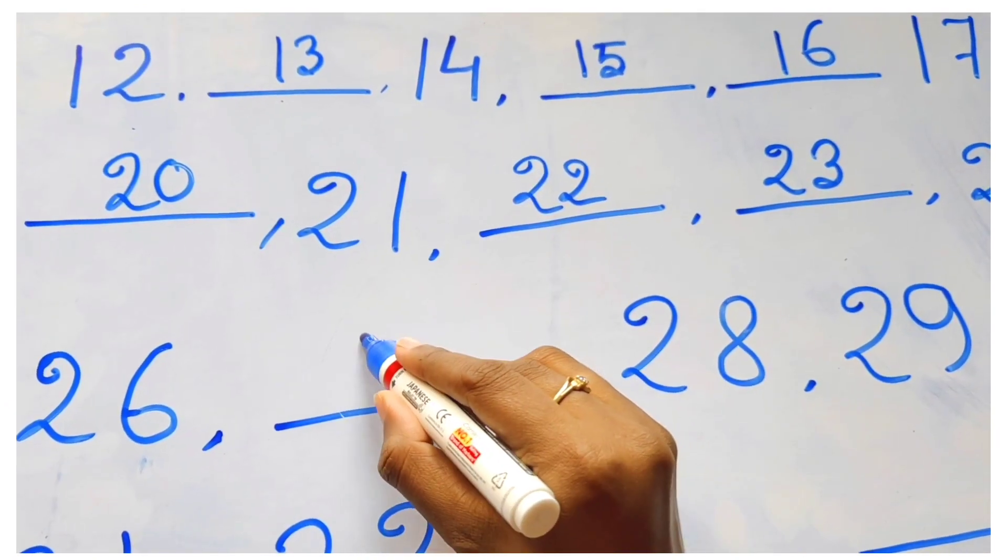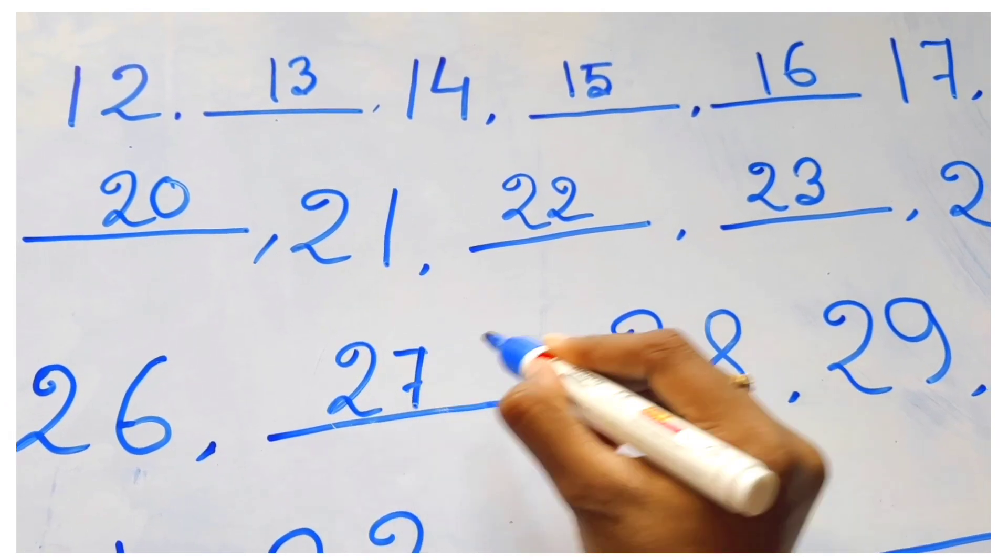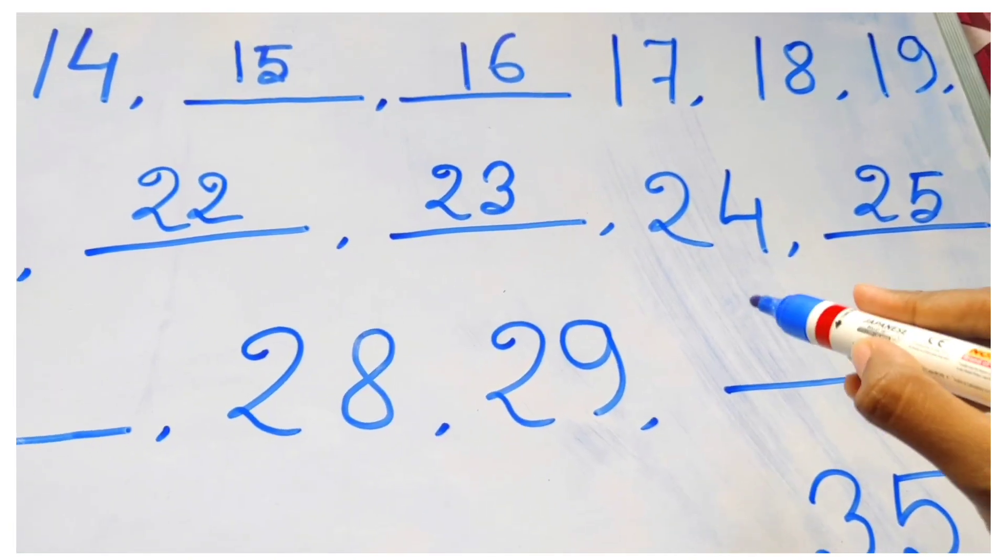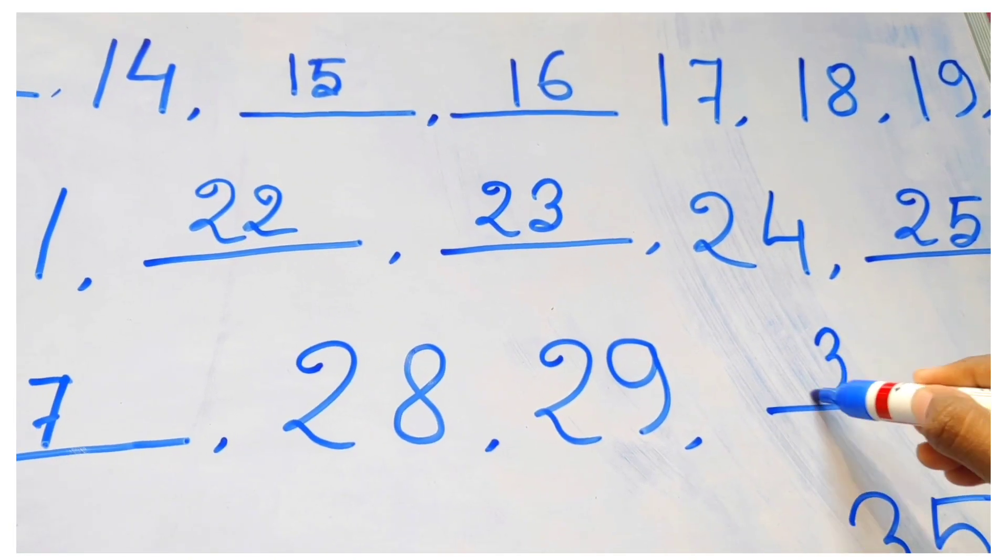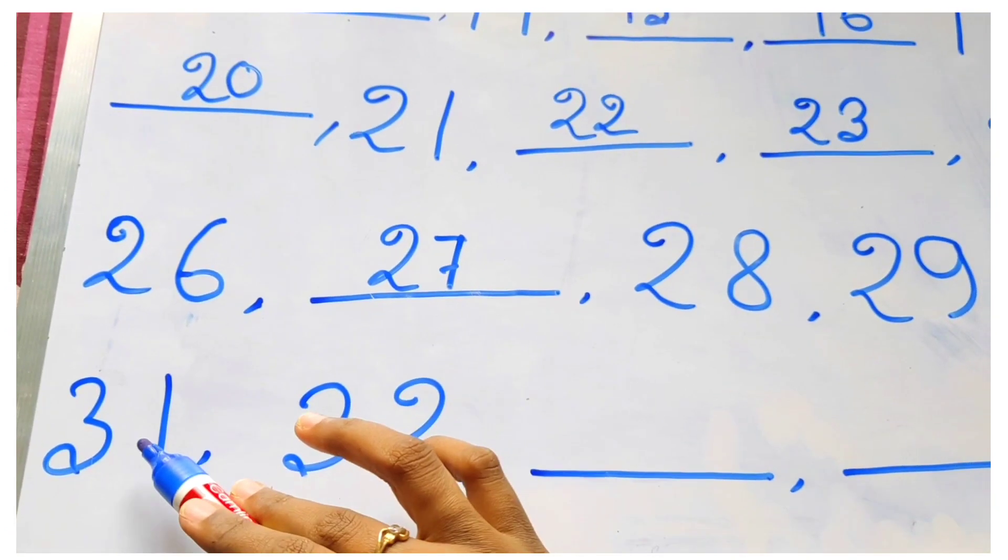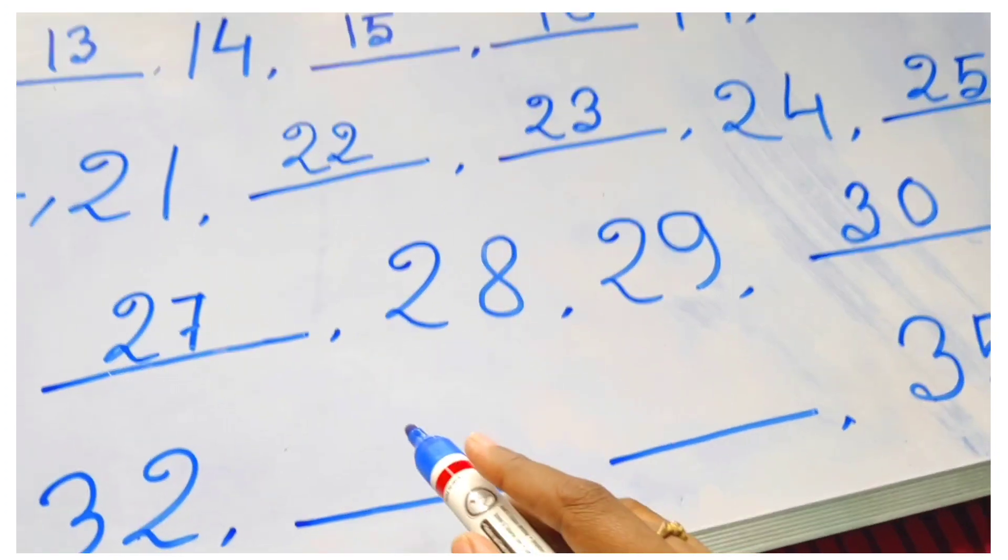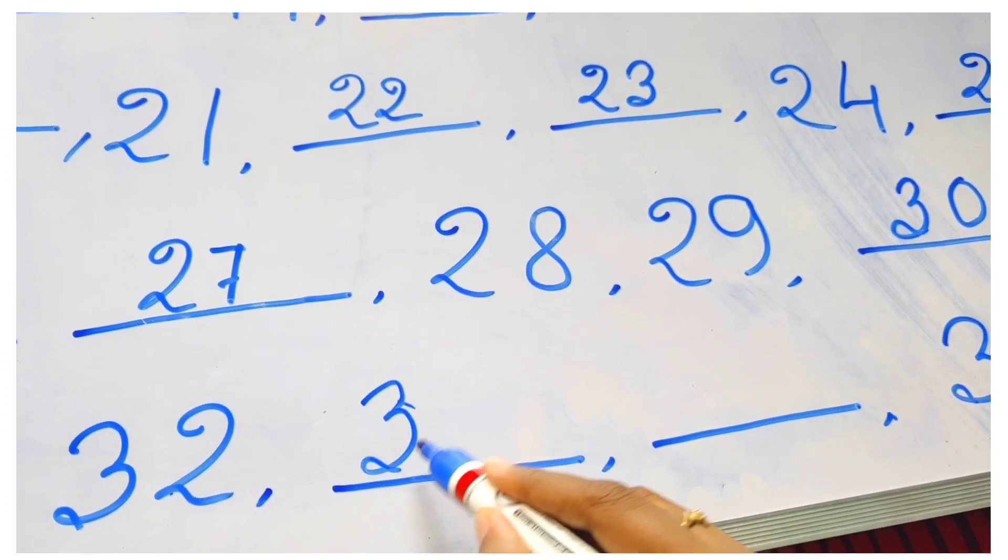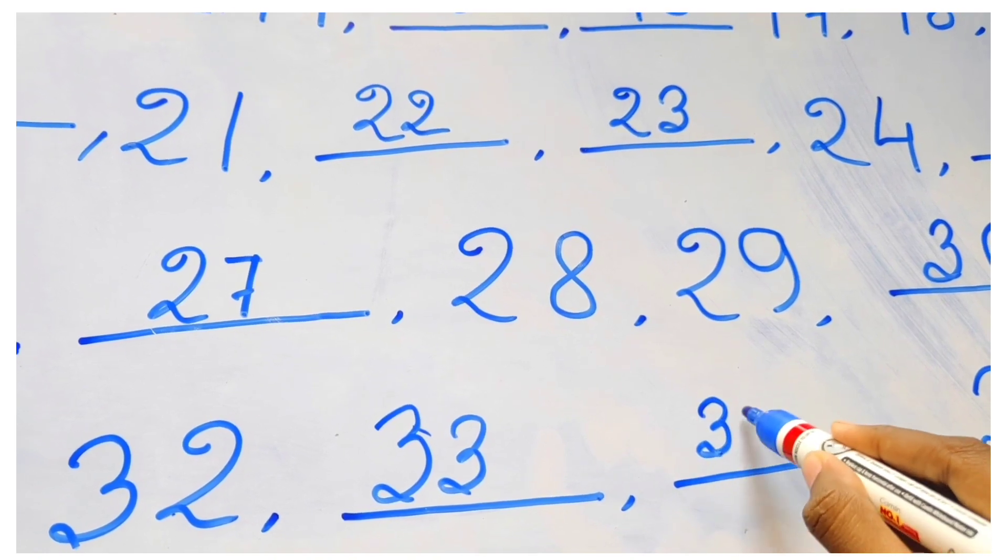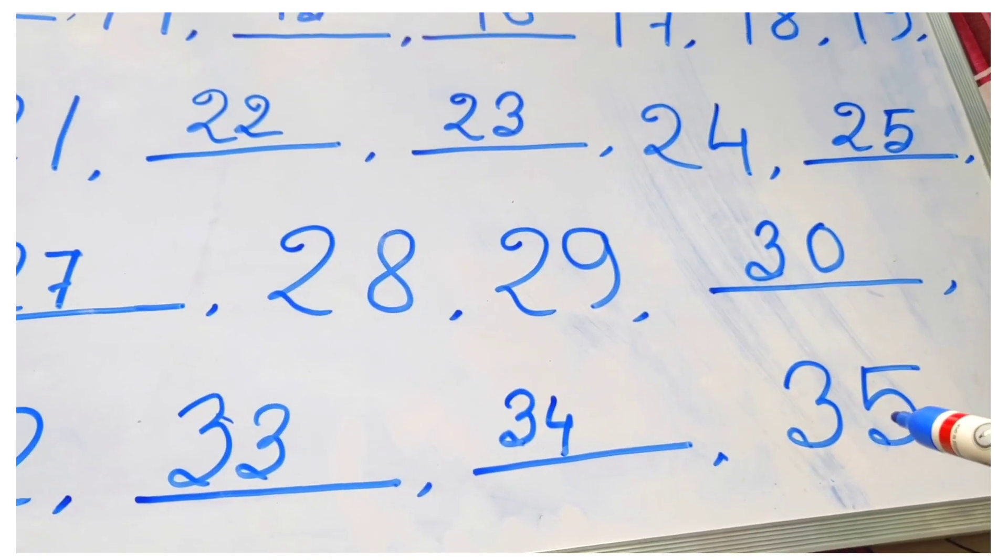Here, twenty-five. Very good. Then twenty-six, twenty-seven, twenty-eight, twenty-nine. Here, thirty. Very good. Next, thirty-one, thirty-two. Yes! Here, thirty-three, thirty-four, thirty-five.